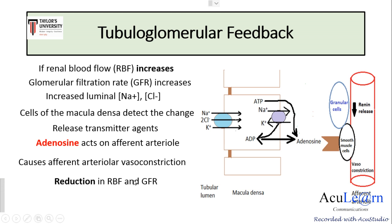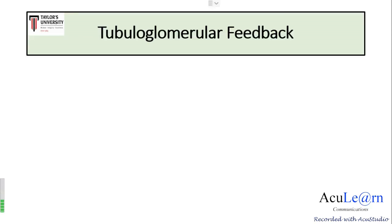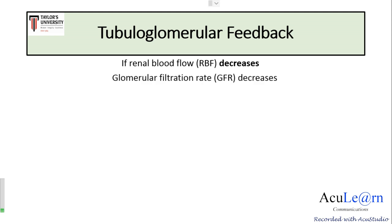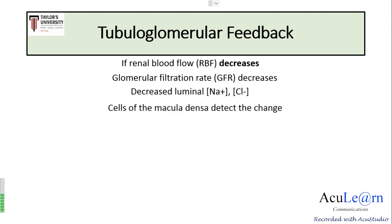Now consider the situation where renal blood flow decreases. In this case, there is a decrease in GFR, so decreased delivery of sodium chloride to the tubules, which decreases the luminal sodium chloride concentration. There is decreased uptake of sodium chloride into the macula densa cells. The macula densa detects this change and releases transmitter agents — in this case, decreased amounts of adenosine.